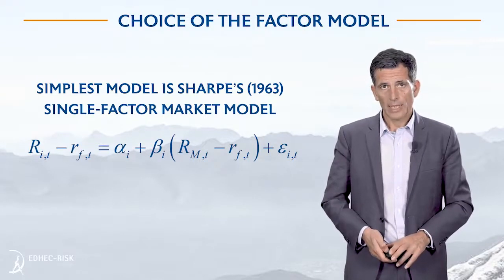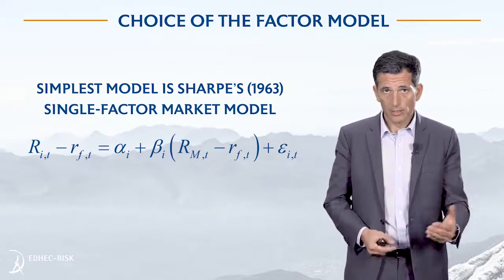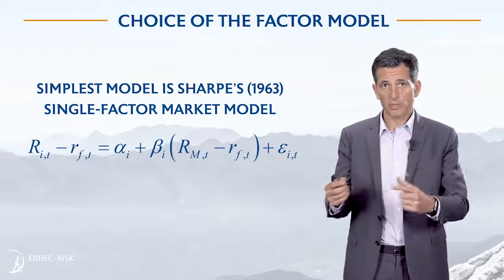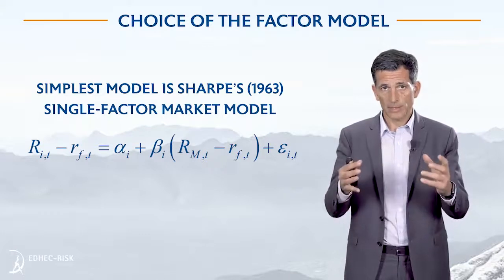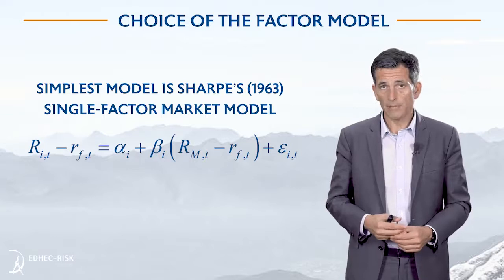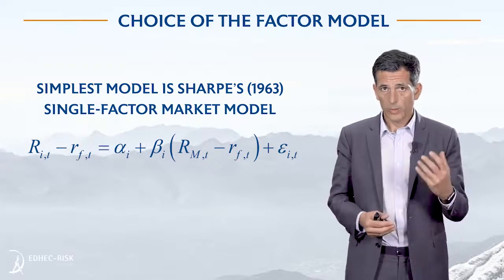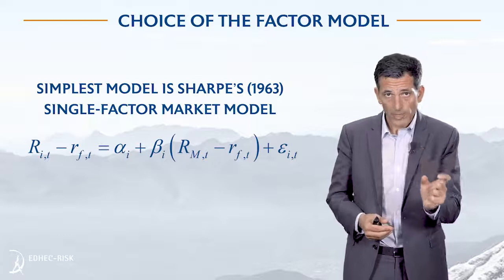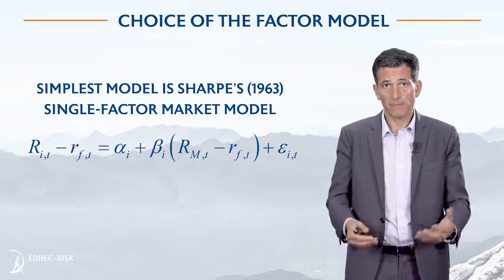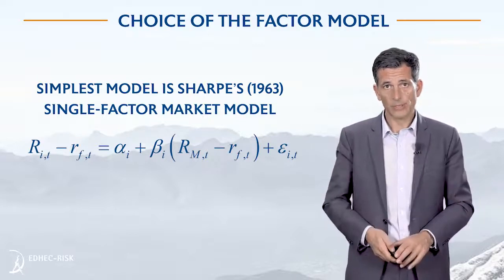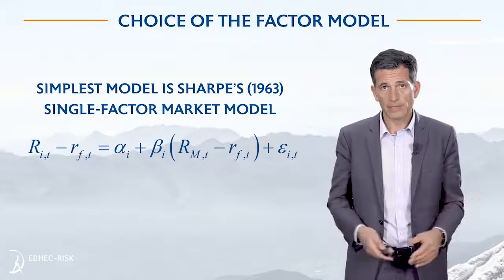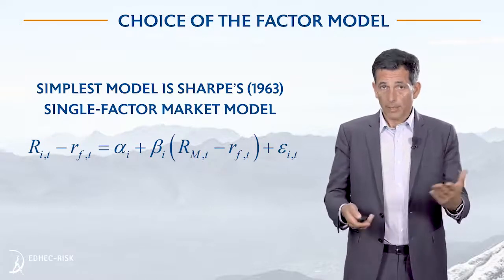Of course, if you do so, you will be concerned that assuming away correlation between specific returns will come with a big cost in terms of simplifying assumptions, because we know that there's more than one common factor impacting asset returns. There are typically multiple common factors impacting asset returns. So it's probably better to be using some kind of multi-factor model.